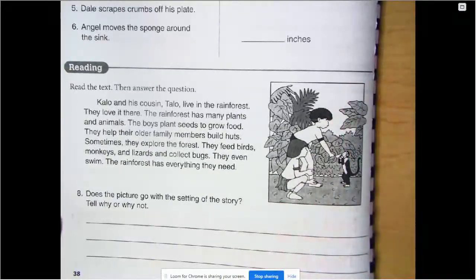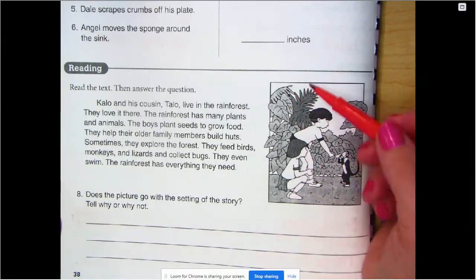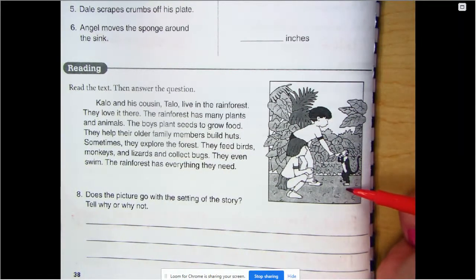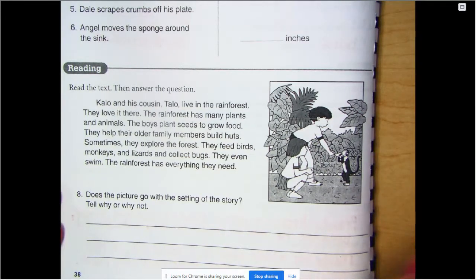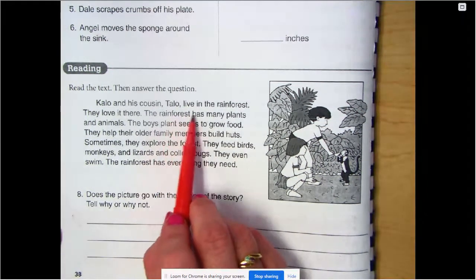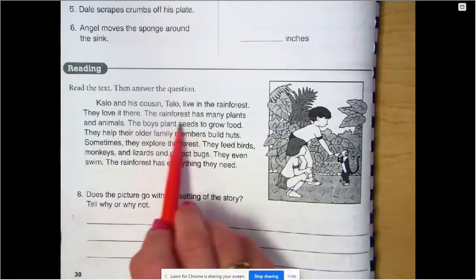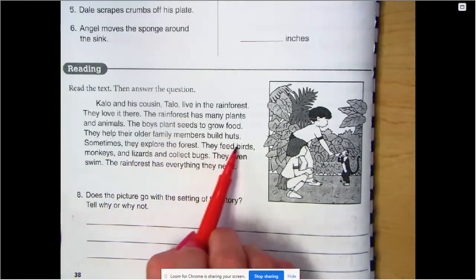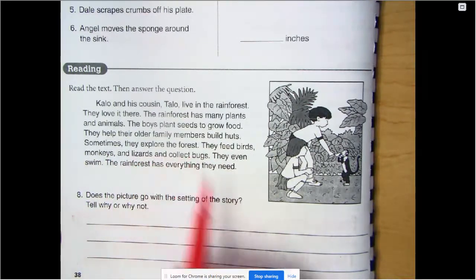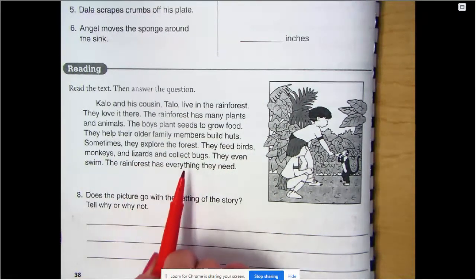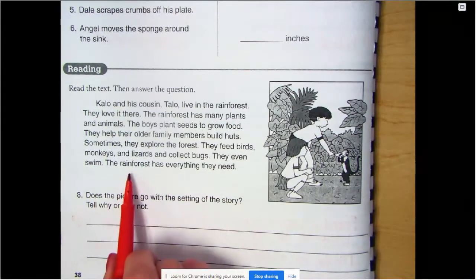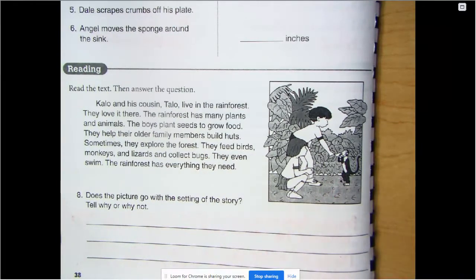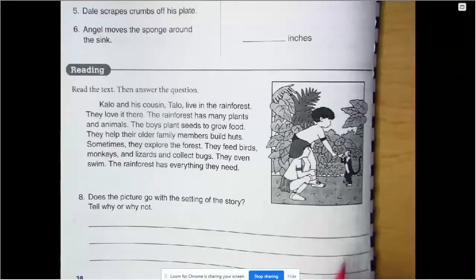Down below, read the text, answer the question. The question says, does the picture go with the setting of the story? Tell why or why not. It looks like we have some people that are feeding a monkey. Looks like we're in a jungle place somewhere. Let's read it and see if the picture goes with the setting. Kalo and his cousin Talo live in the rainforest. They love it there. The rainforest has many plants and animals. The boys plant seeds to grow food. They help their older family members build huts. Sometimes they explore the forest. They feed birds, monkeys, and lizards, and collect bugs. They even swim. The rainforest has everything they need. Does the picture go along with the story? If it does, how do you know? If it doesn't, how do you know?